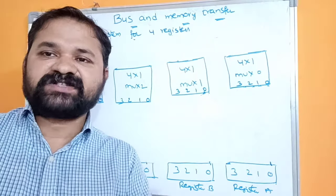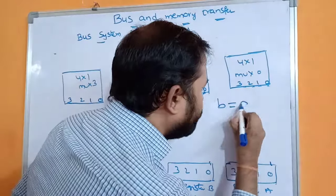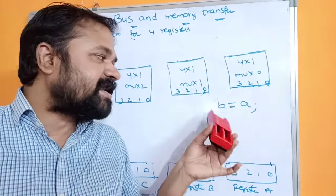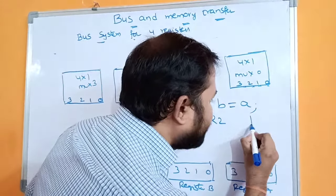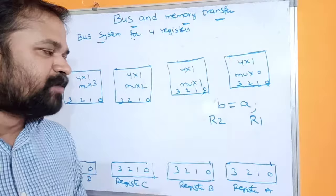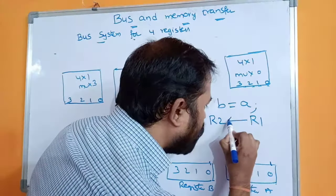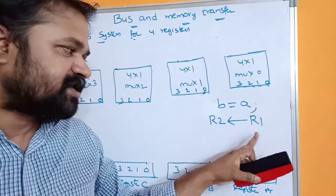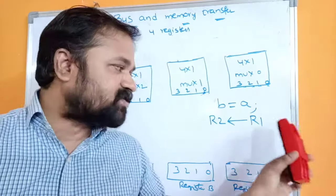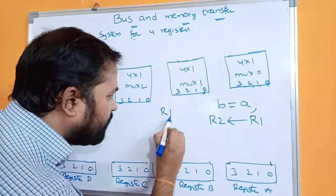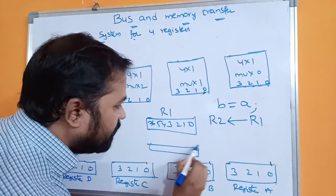Let's see about bus and memory transfers. First, the advantage of bus: in a programming language, assume we want to execute a statement like b = a. Internally, variables are represented as registers, so let b be represented as R2 and a as R1. In register transfer, we use an arrow operator. When this statement is executed, the contents of R1 will be transferred to R2. Assume the size of each register is 8 bits, so R1 and R2 each have bits 0 to 7.